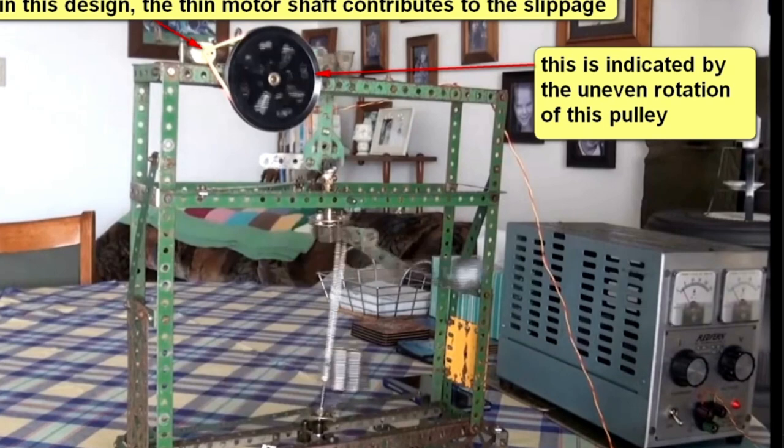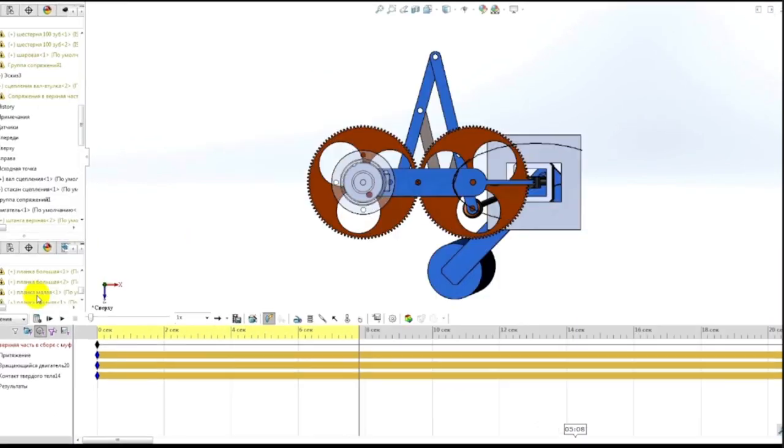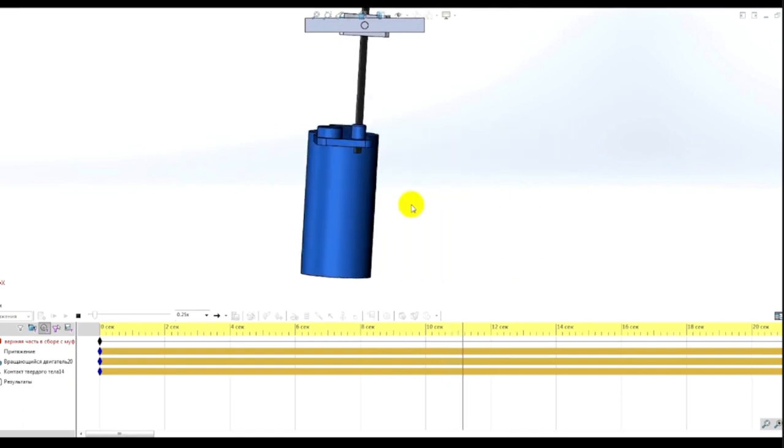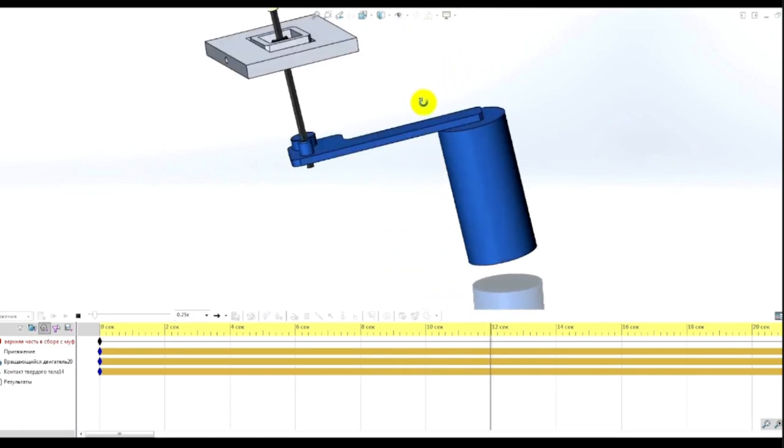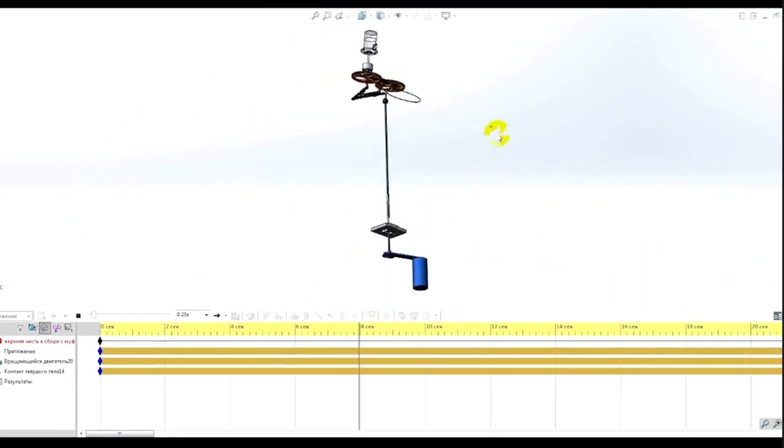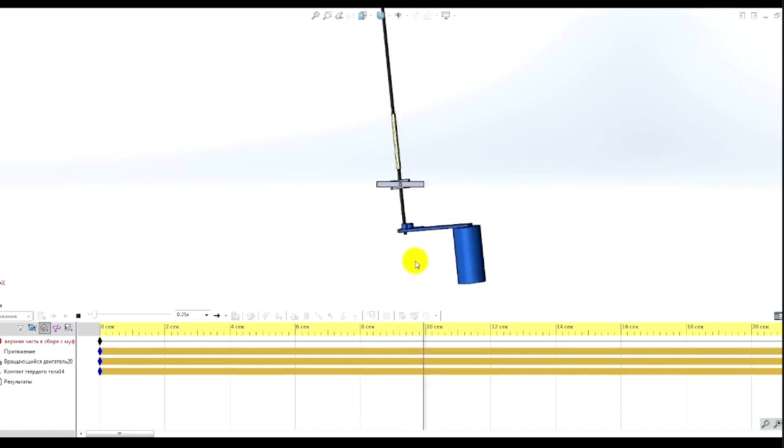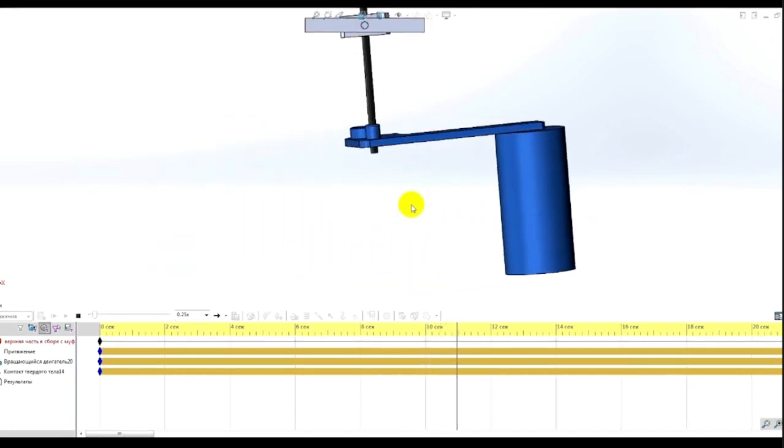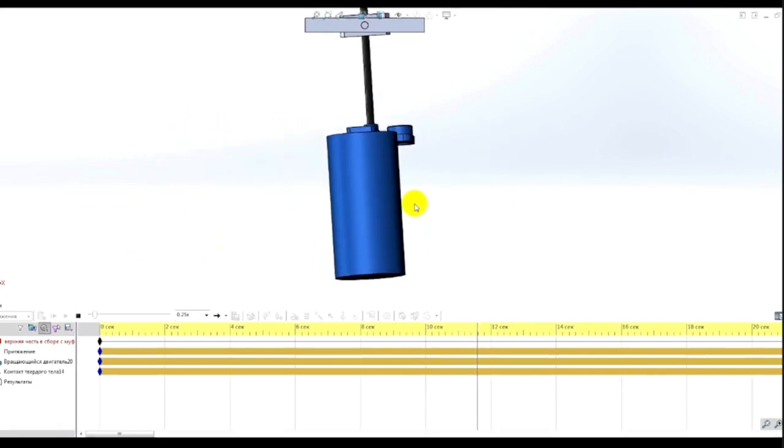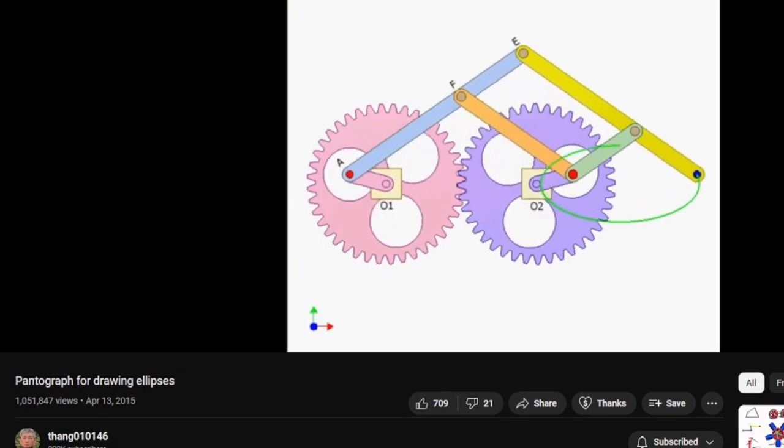He even shows this video. The thin motor shaft contributes to the slippage. So this guy's had it pretty much right. But they never showed a working model. So maybe they never built one. So this top weight does something like this. It drives me crazy. I don't like having the top weight. I don't think you need it. So this might work. But it's a little bit complicated. And all it is is a pantagraph for drawing ellipses.